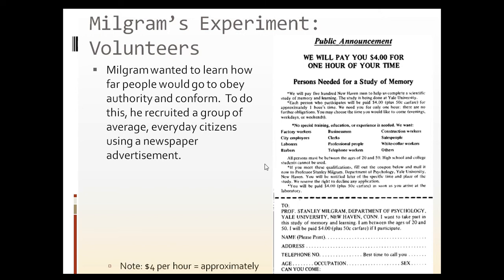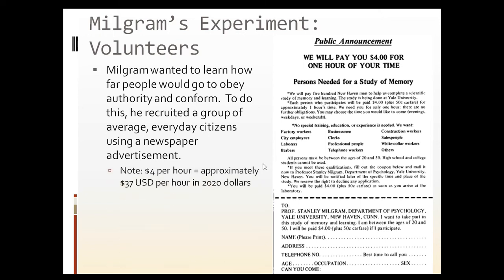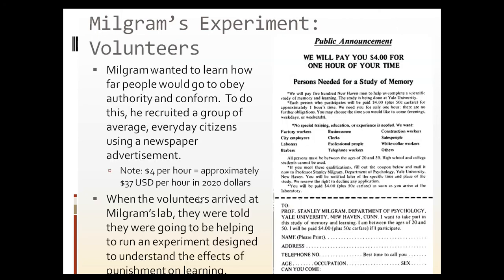So essentially, if a person had an afternoon off and was bored, they were offered $40 to come in, do an hour's work, go home, and help him learn something very interesting. When the volunteers arrived at Milgram's lab, they were told they were going to be helping to run an experiment designed to study the effects of punishment on learning, and that they would be participants who would help administer the study.